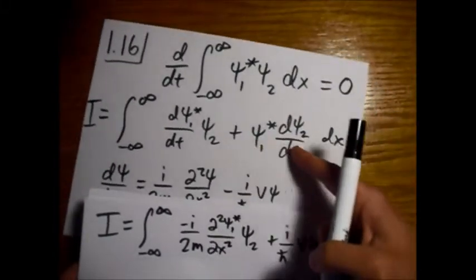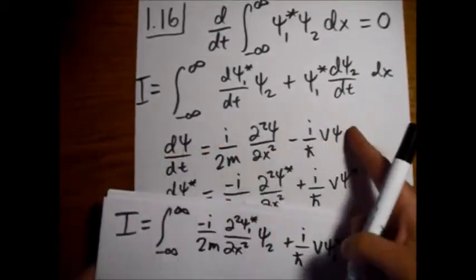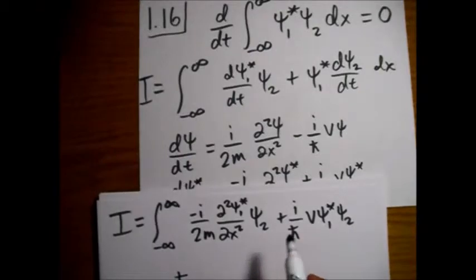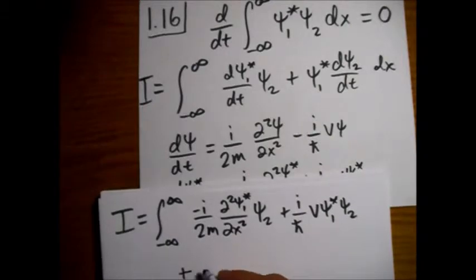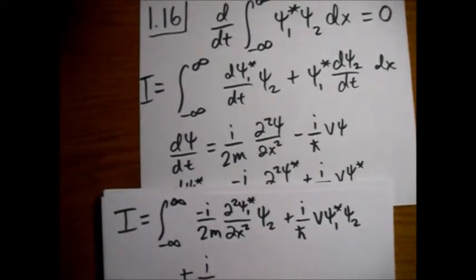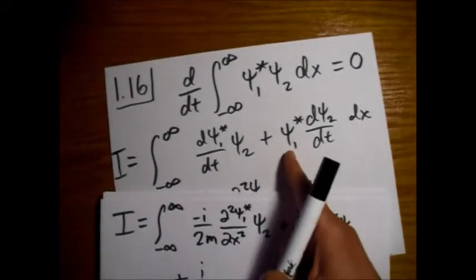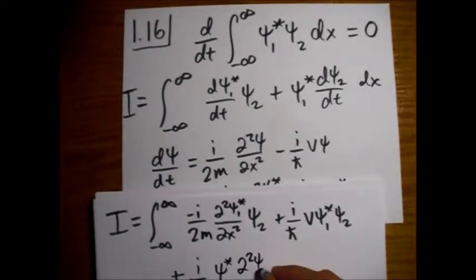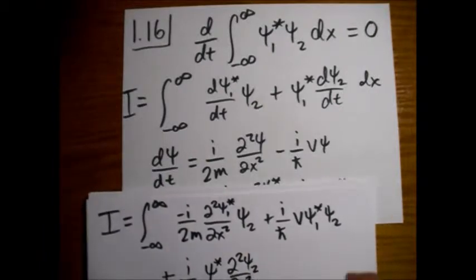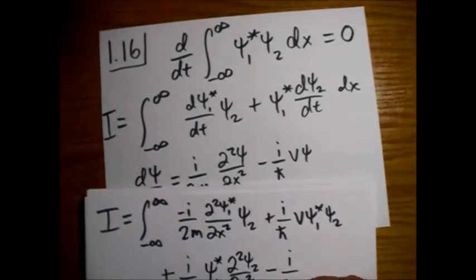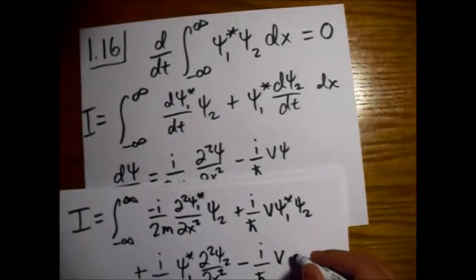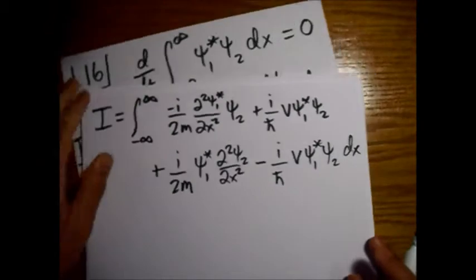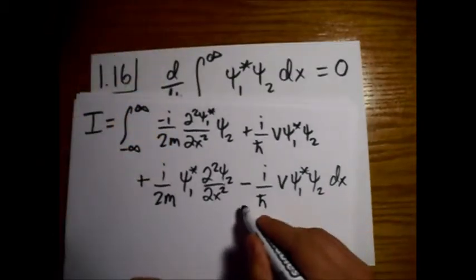So now we're going to move on to this term here and use this equation right here. So just going to jump down a line here. So this one right, I over two M. And then we have our conjugate wave function number one here. And then we have this term number two. And then we have this term number two. Now we are subtracting. Number V. This time we have counter number one and number two again. And there's our integral. Alright. Good for us. We have these two terms that go away.